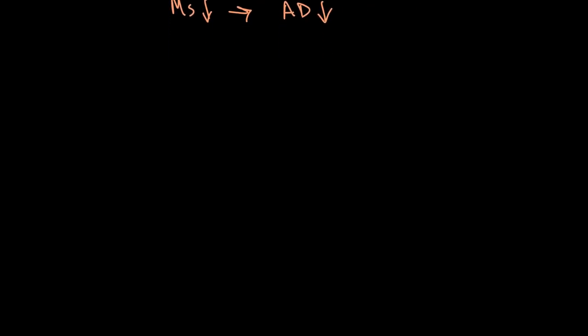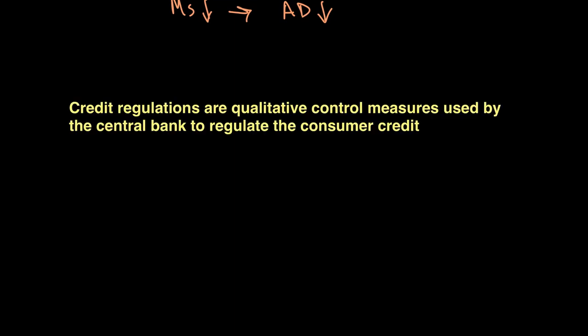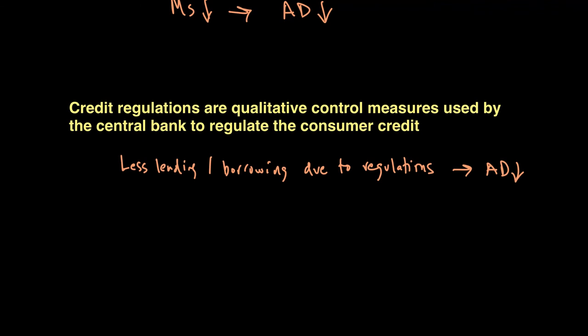Another tool is credit regulation — qualitative control that the government or central bank may put on consumer credit, making it difficult for people to borrow money. Higher regulation means more rules for borrowing, making it easier to manage aggregate demand. When there is less lending or borrowing, people automatically have less money to spend and therefore AD may fall. This is part of how monetary policy uses rules and regulation to control aggregate demand.